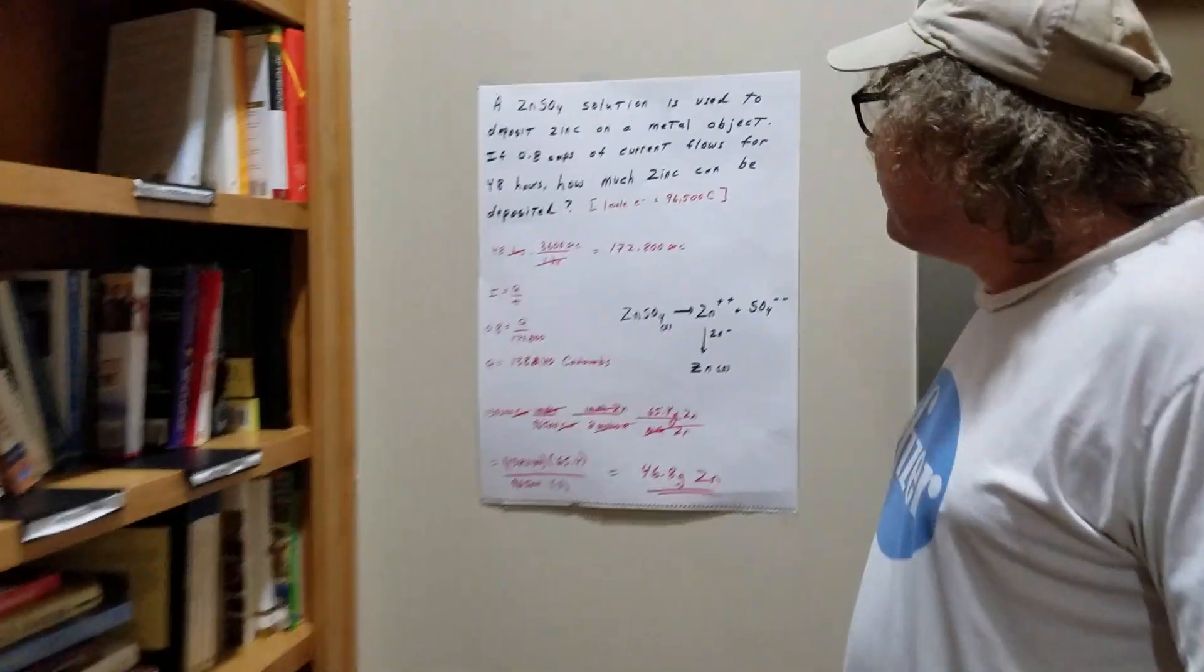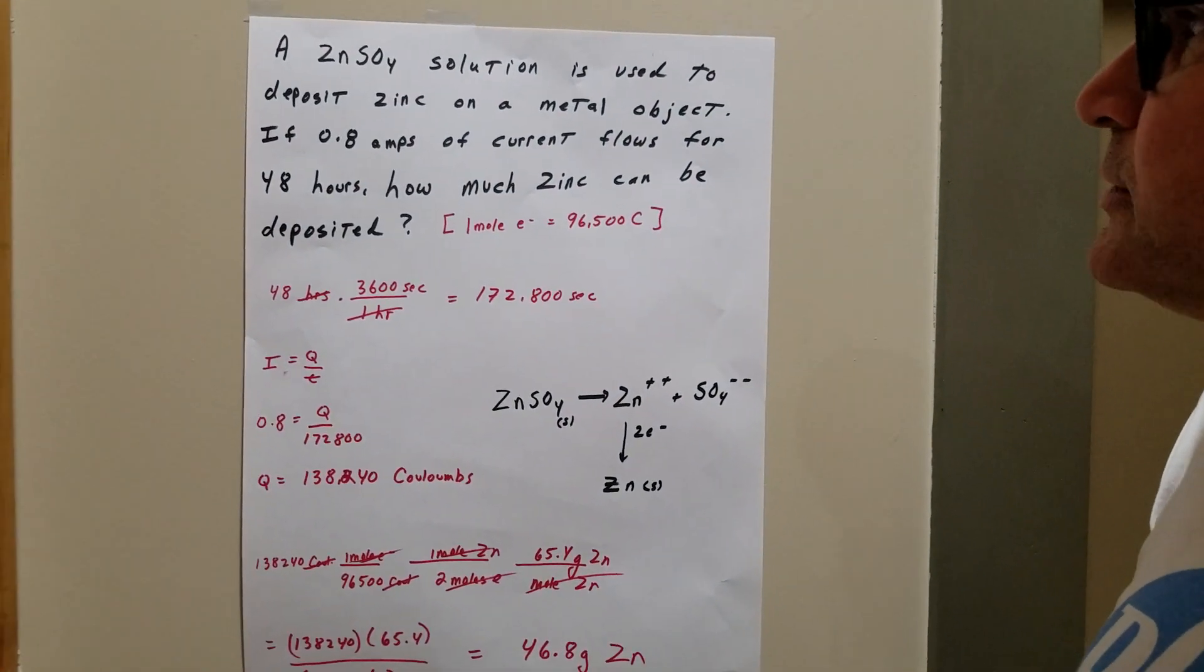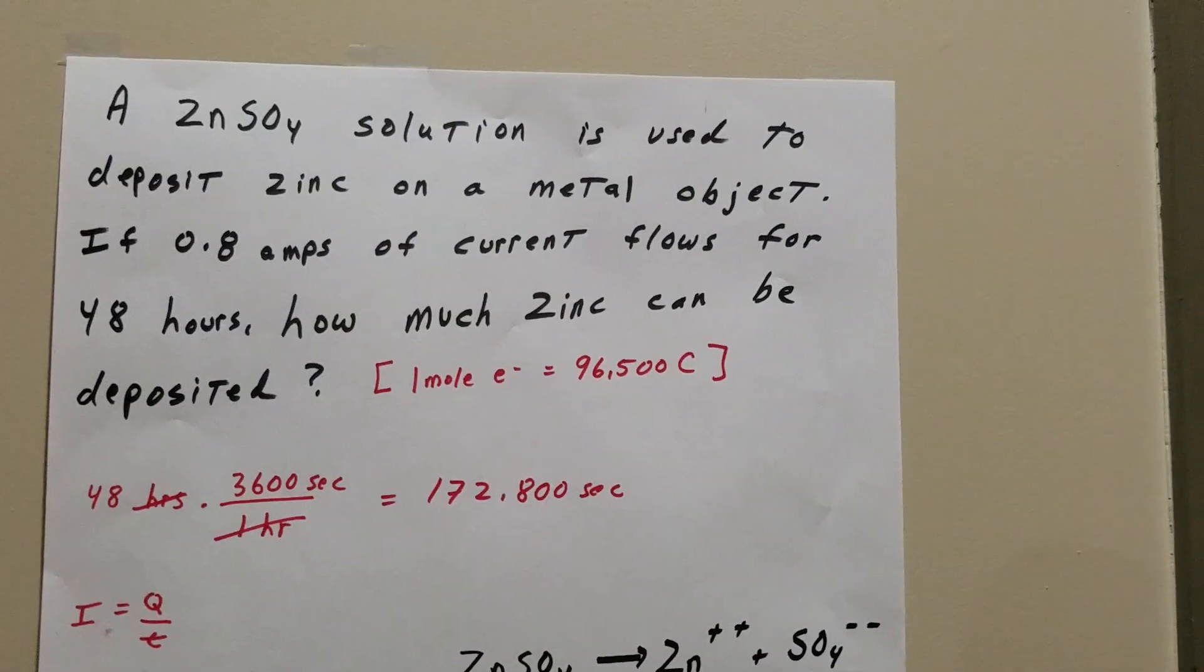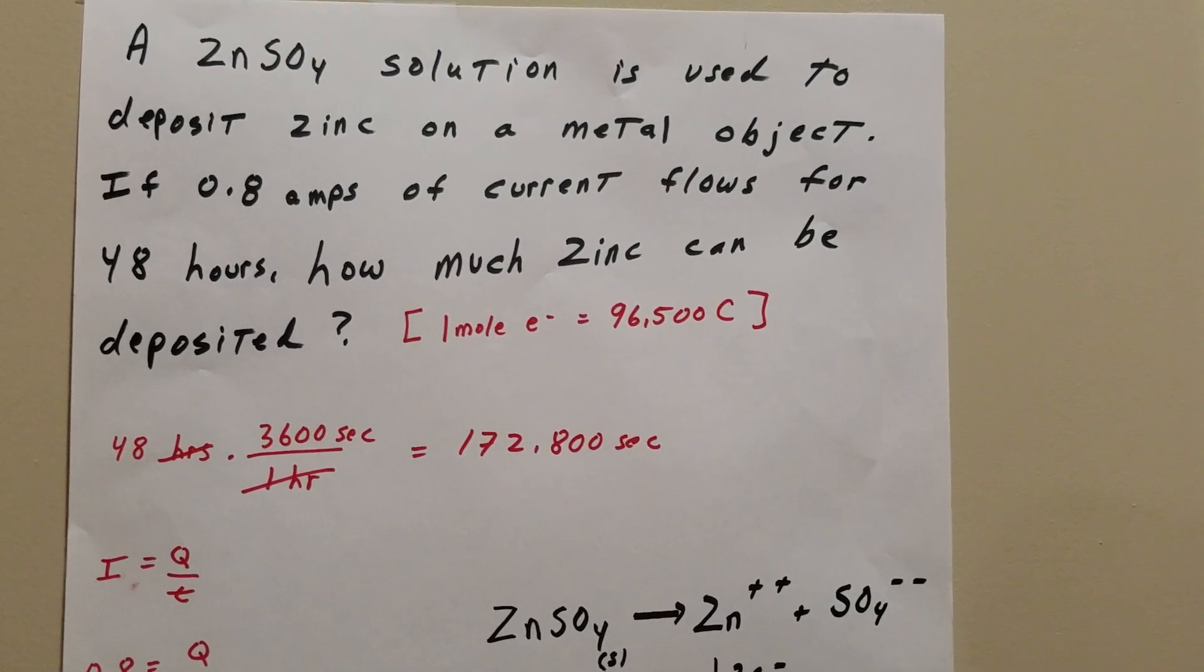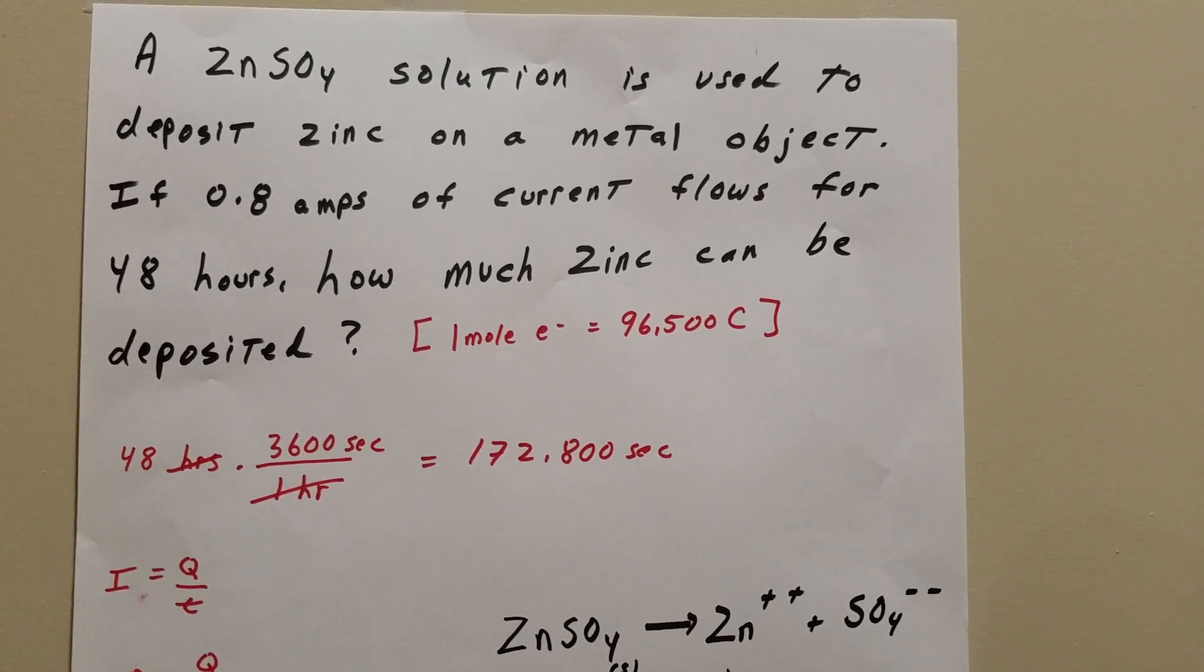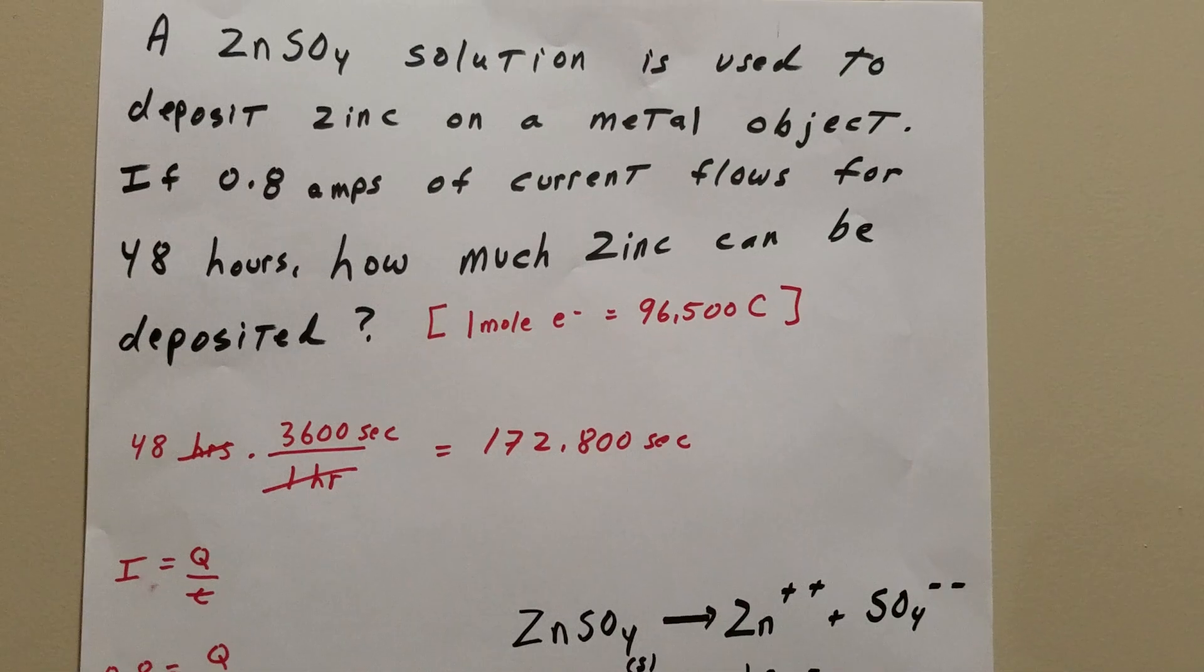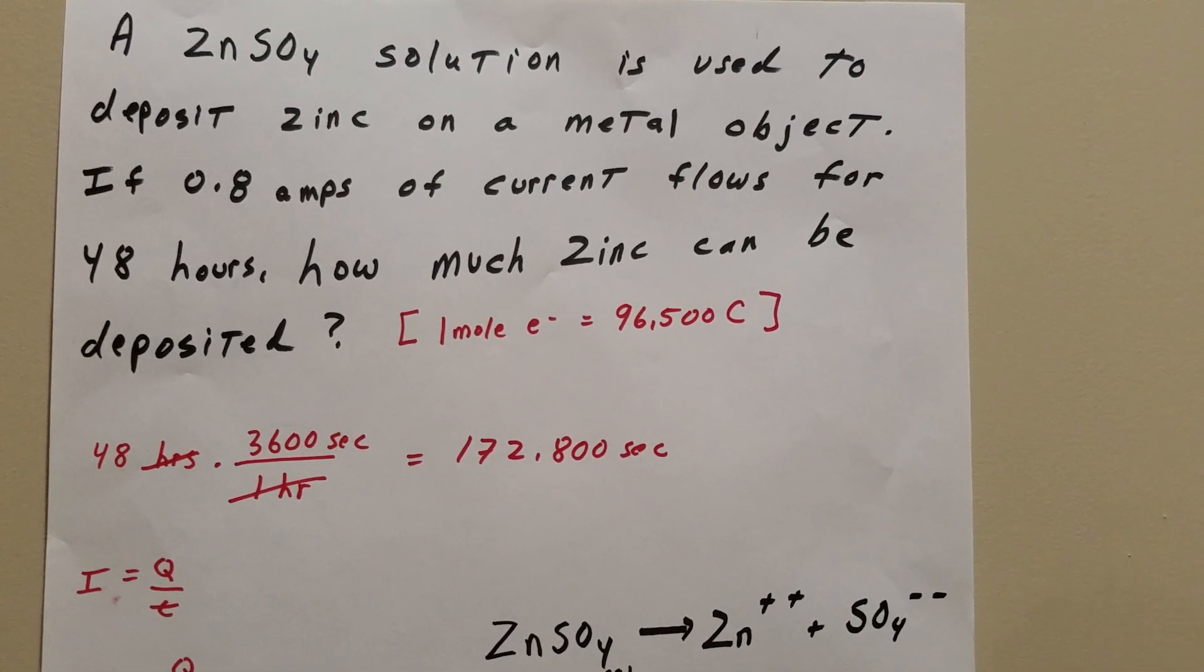Okay, Dr. Romano. This is a very important question for the DAT. We have a zinc sulfate solution used to deposit zinc on a metal object. We're going to use 0.8 amps of current for 48 hours. How much zinc can be deposited? I gave you one mole of electrons is 96,500 coulombs, so you don't have to memorize for the DAT.